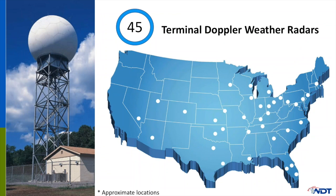There are also 45 Terminal Doppler Weather Radars, also known as TDWRs. They're located at airports and are used to detect weather that could affect aircraft, such as wind shear and precipitation. Placed in thunderstorm-prone areas, they assist air traffic controllers by producing high-resolution data.